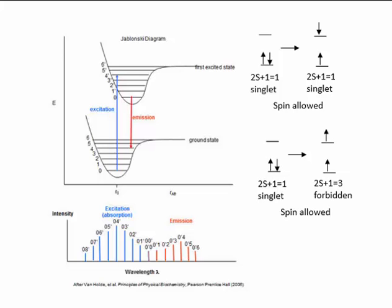This video is basically a brief description of pages 316 to maybe 319 or 320 in the R3 workbook. I'd like to talk about fluorescence, phosphorescence, and chemiluminescence.